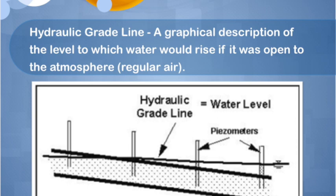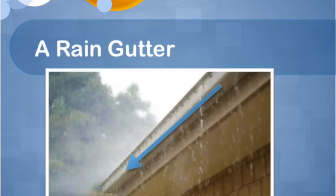A rain gutter is a perfect example of what a hydraulic grade line can look like. When it rains, water hits the roof of a building and flows downwards into the rain gutter. Water can move back and forth inside the gutter, but the hydraulic grade line is the straight path along the rain gutter that the water travels under regular pressure. The blue arrow on the gutter shows that this hydraulic grade line follows the path of the water.